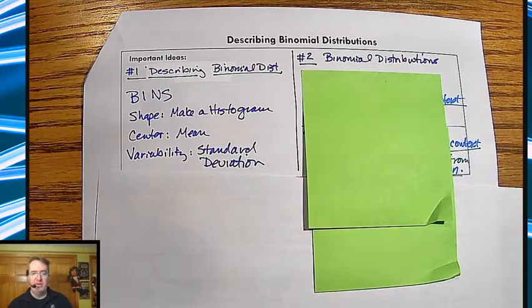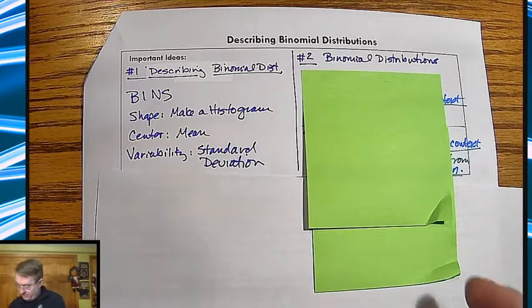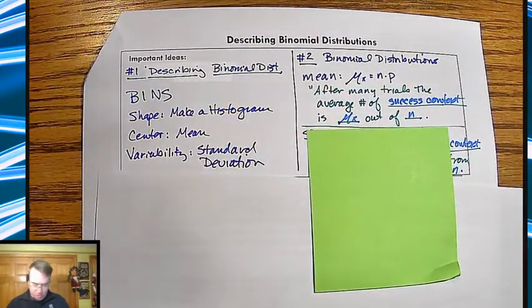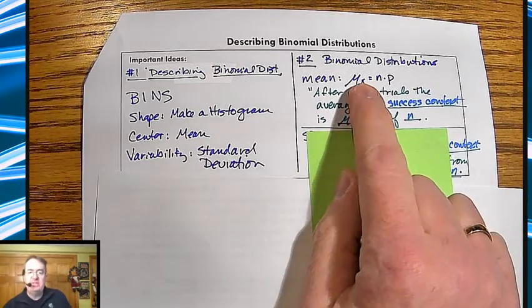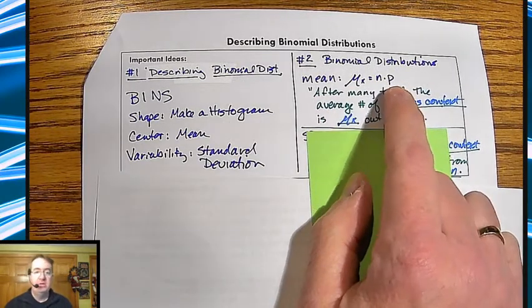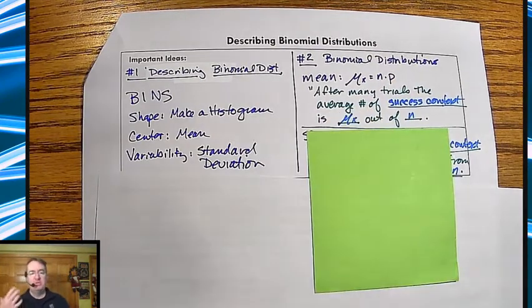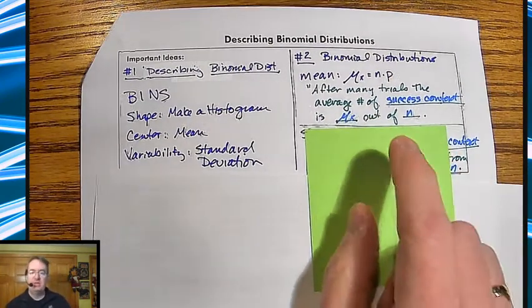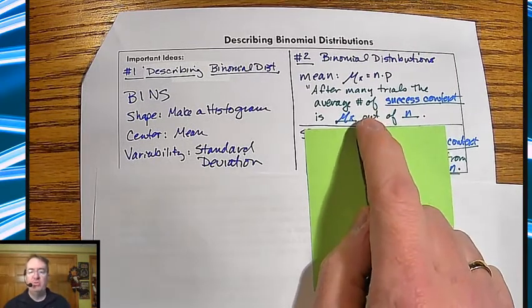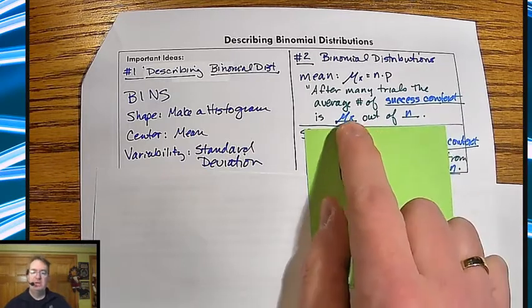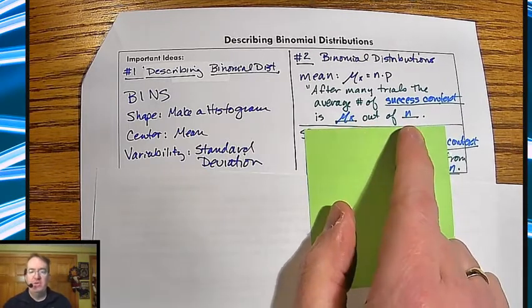And these two we're going to talk about over here, your calculations couldn't be simpler. Binomial distribution, for binomial distributions, the mean is just going to be simply n times p. So the number of trials times your probability of the success happening. And then in terms of the description, you'll need to write it out like this. After many trials, the average number of, and then you're going to put the context of the success, is the mean out of the number of trials.